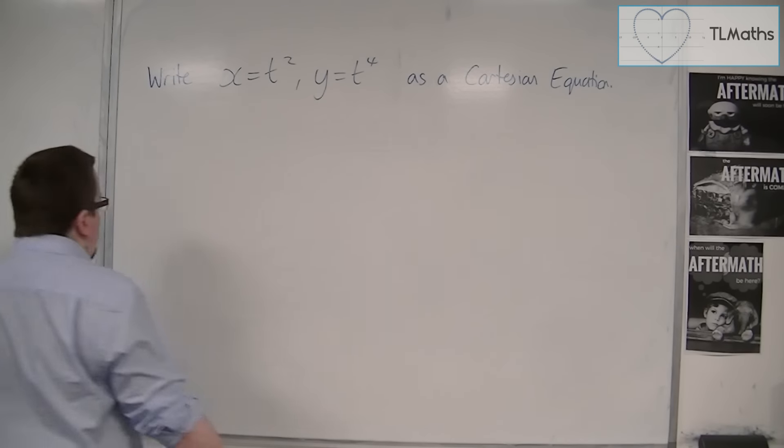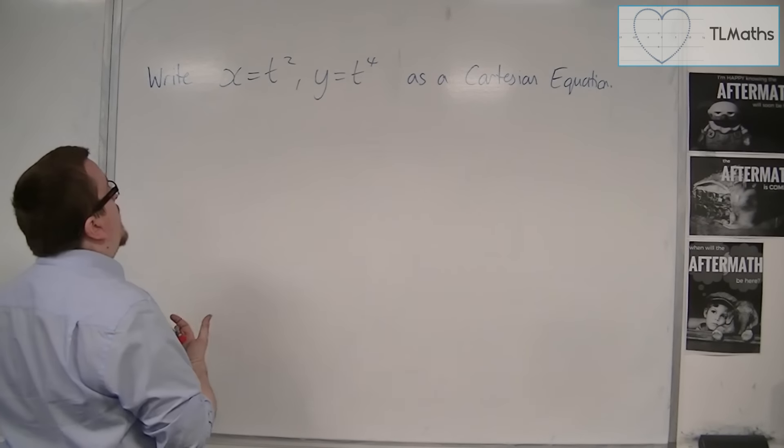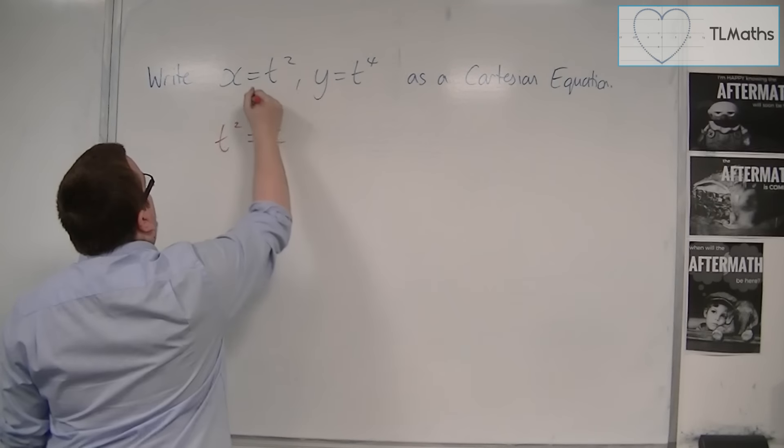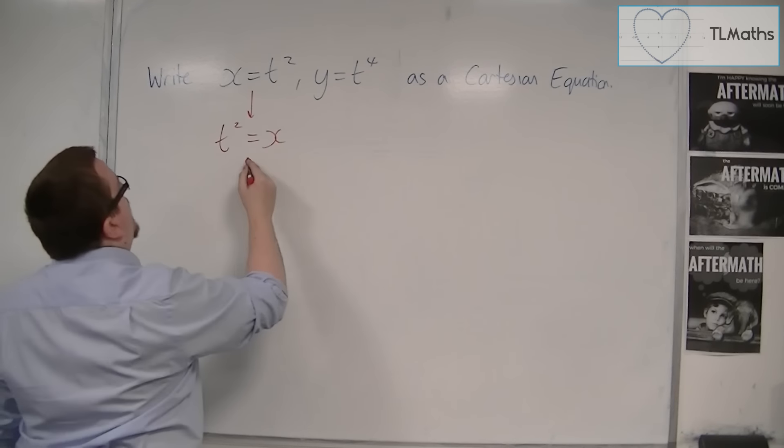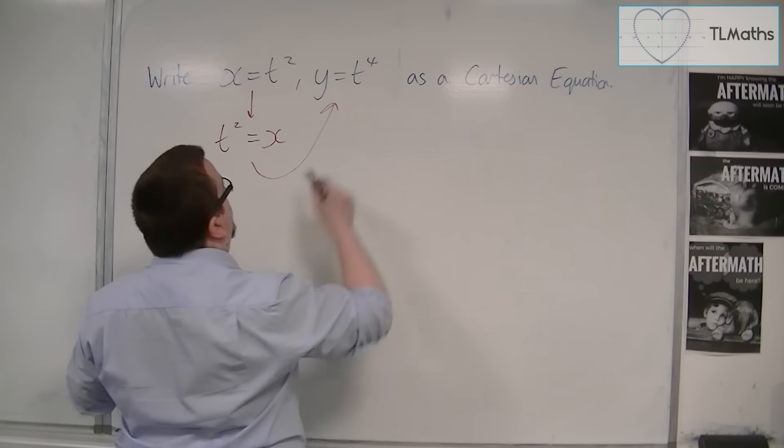Now this one doesn't look too difficult when we compare it with the previous video because ultimately what you could do is say, if t squared is equal to x from there,